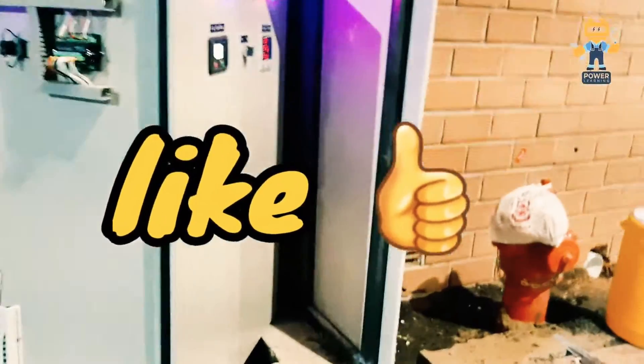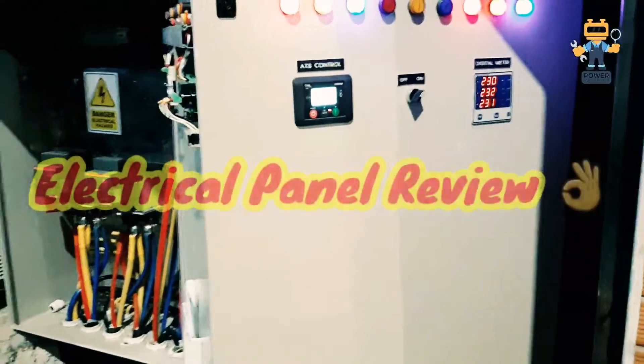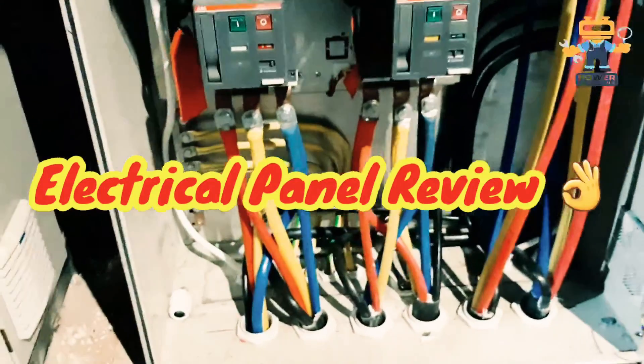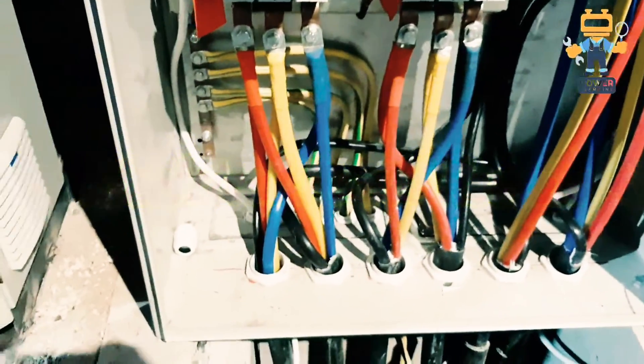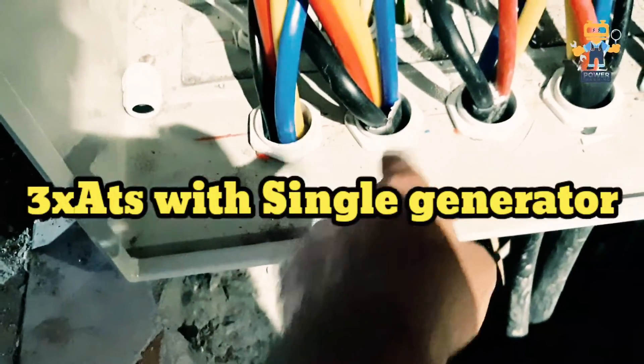The three ATSs are 400 amps, 400 amps, and 200 amps. We are using here single generator with three ATS panels. In this video I will show you one by one, step by step, all the accessories and all the components which are installed inside this panel.